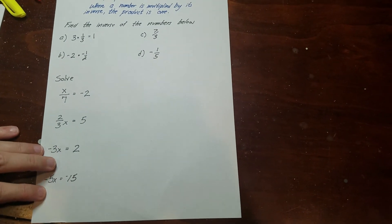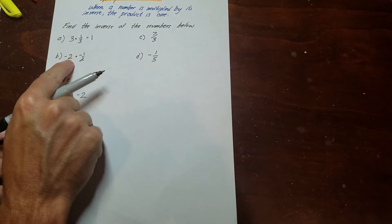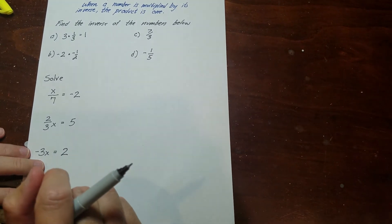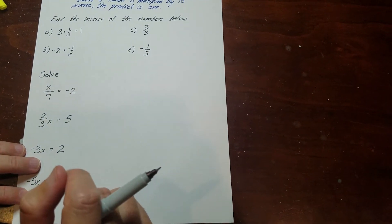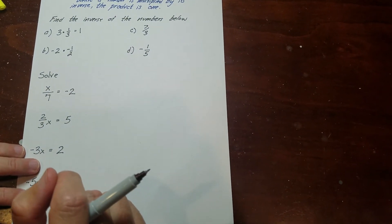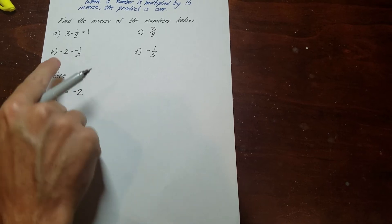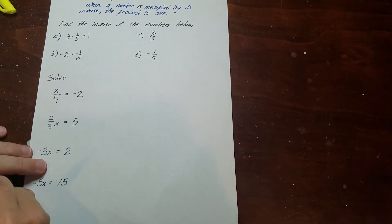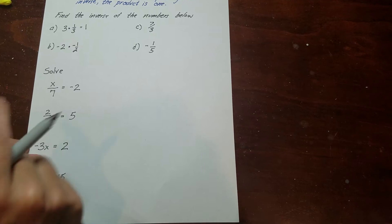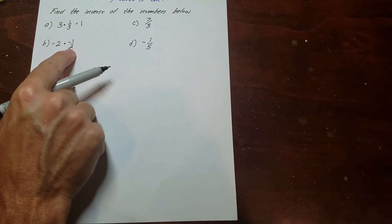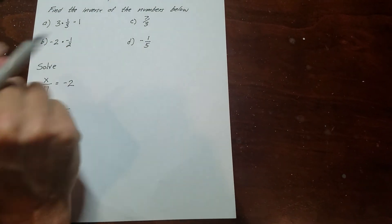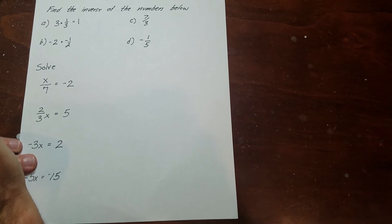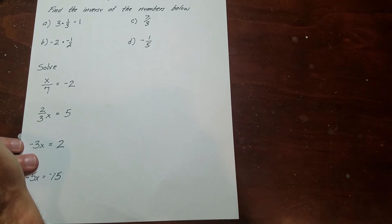That is important, because a lot of times when people see negative 2 and I ask for the inverse, they'll say it's 1 half. Close, but not quite — because if I multiply negative 2 times 1 half, I get negative 1, not 1. So if the number is negative, its inverse will also be negative. Don't forget that; it's a very common mistake when using the multiplicative inverse to solve equations.